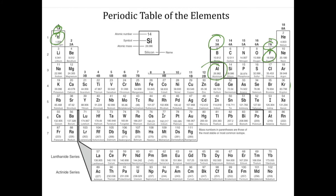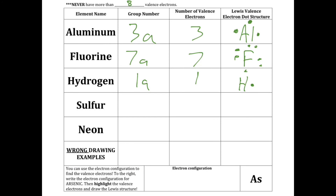Sulfur is right here — it's in the 6A. You go 1, 2, 3, 4, then pair them up, so sulfur has 2 pairs of electrons. Neon is in the 8A, so it's going to have 8 valence electrons.